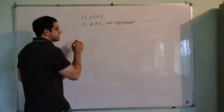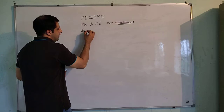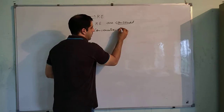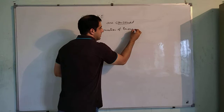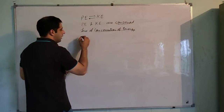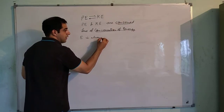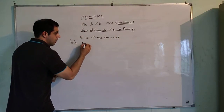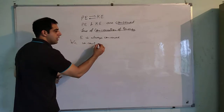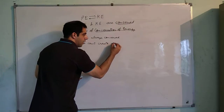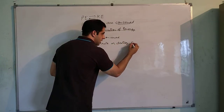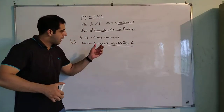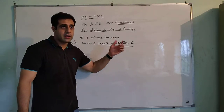Both of them are conserved, and this brings us to a very important law in science which is called the Law of Conservation of Energy. This law says that energy is always conserved because we cannot create or destroy energy. It is a very small statement but its meaning is very deep — we cannot create or destroy energy.